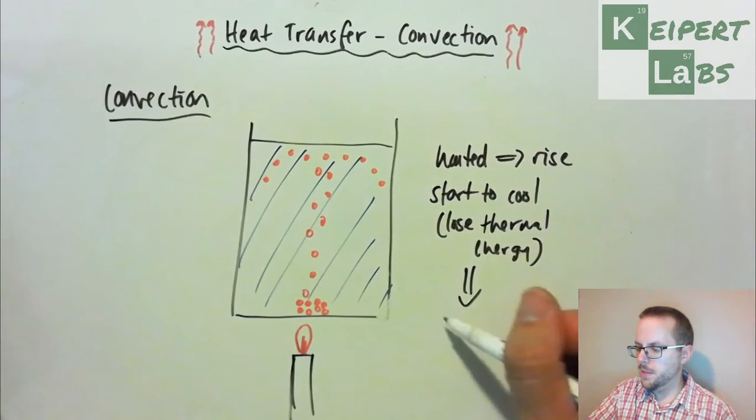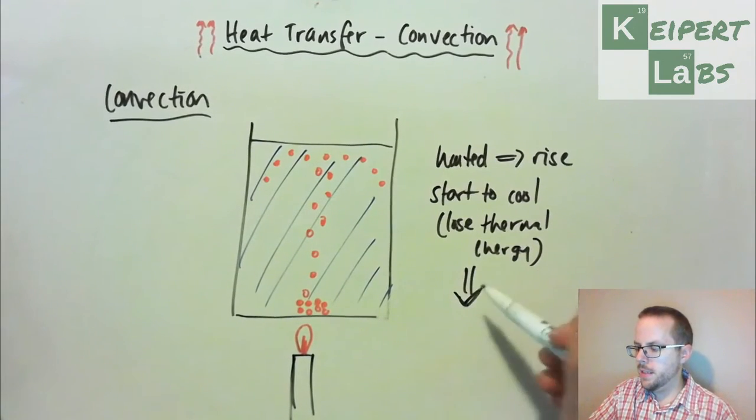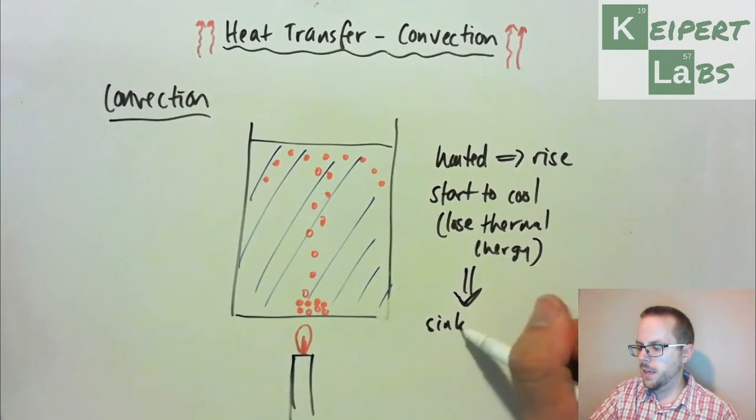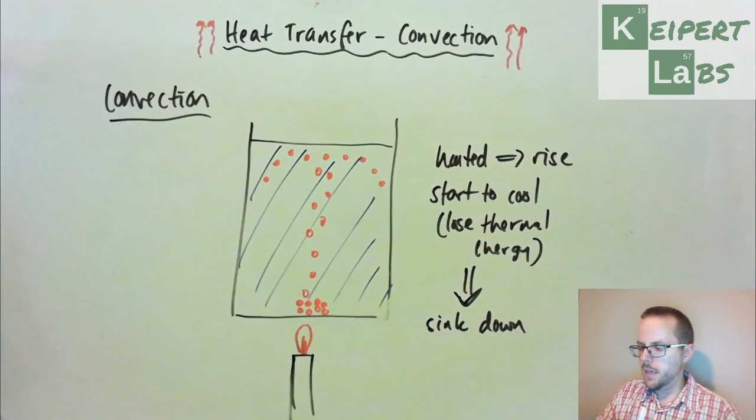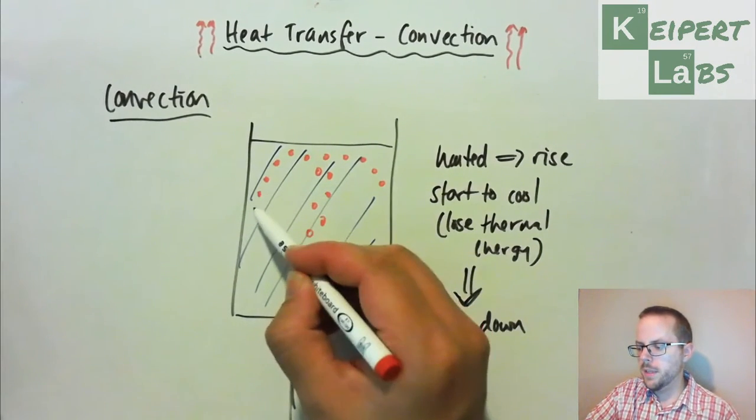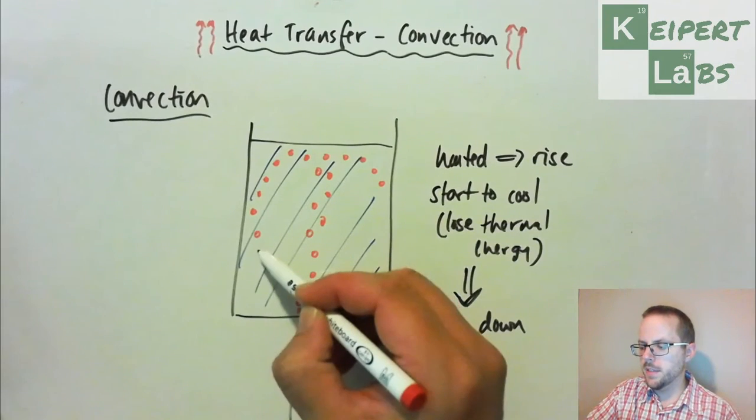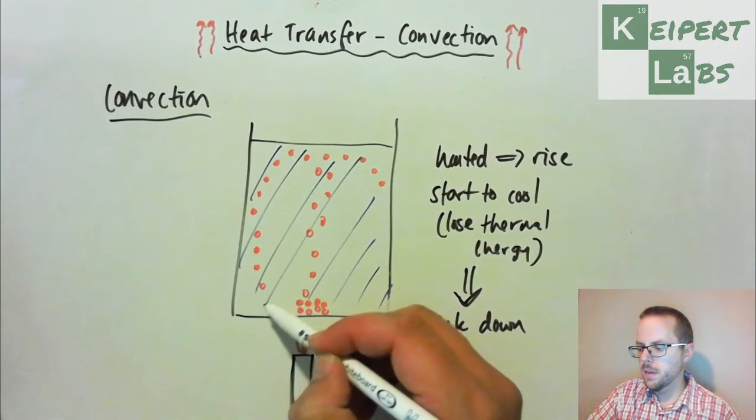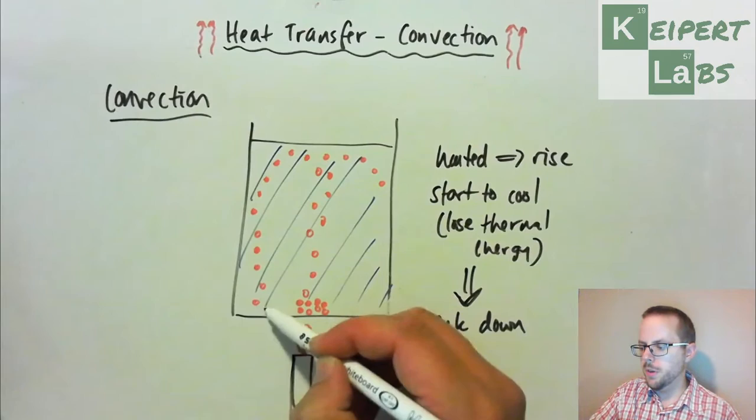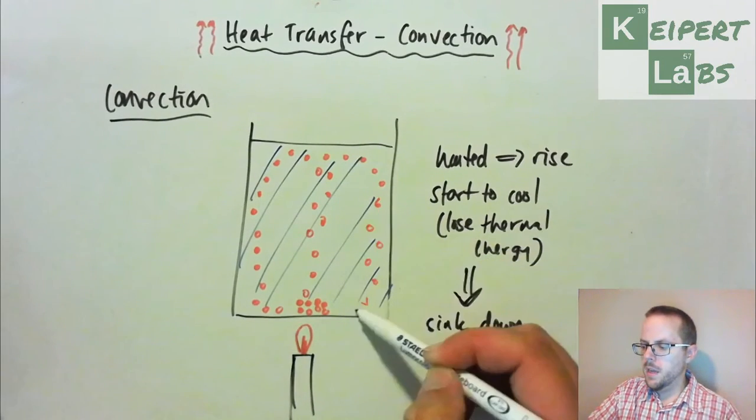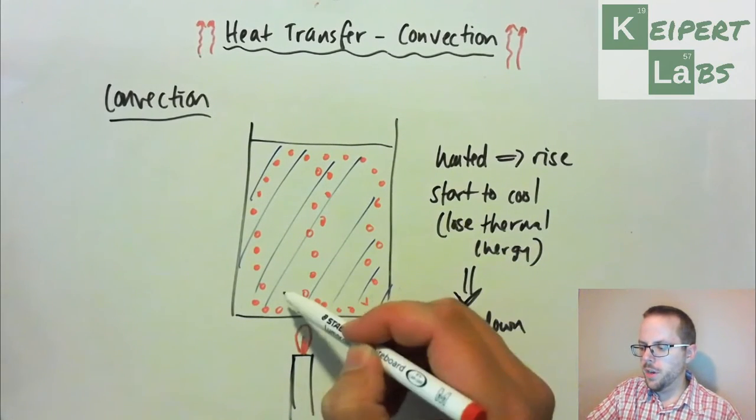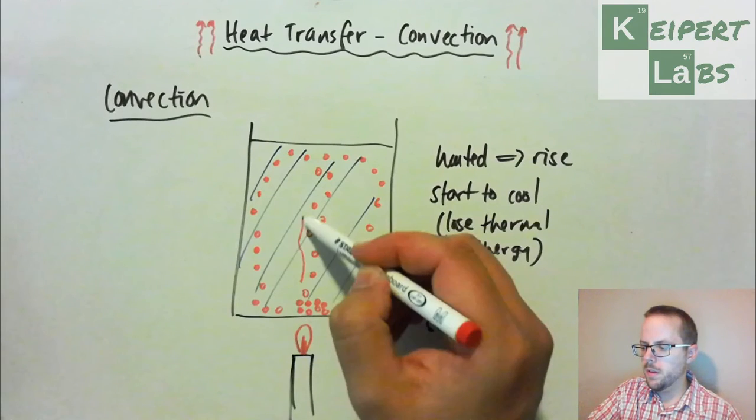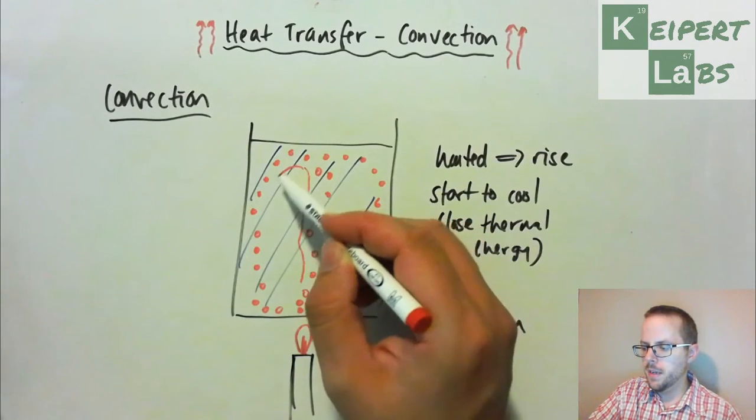What then happens from there is that they start to sink down again. So if we could trace these water particles, then they work their way back down the sides of the container in this kind of pattern, getting down towards the bottom. And then they pick up some more thermal energy because the flame's going on, and then they start back up again.